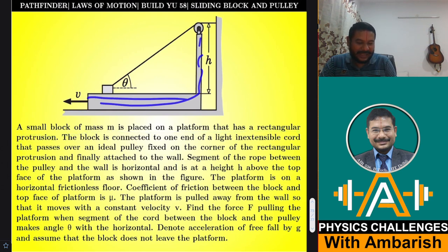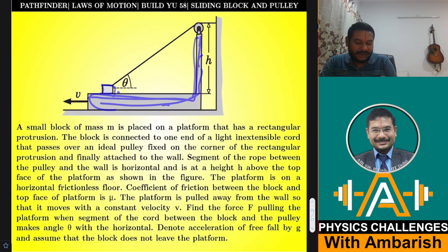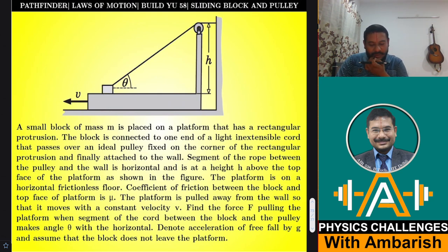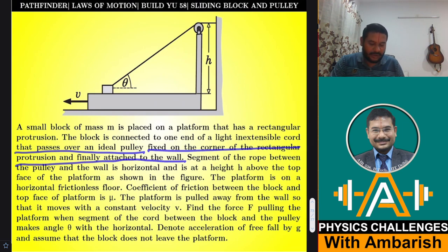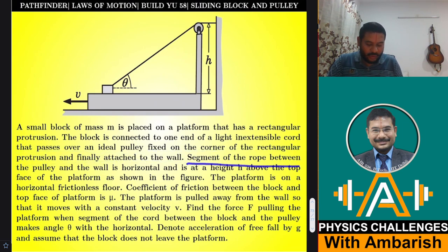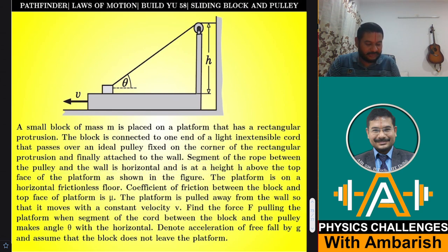This is a kind of L-shaped plank, and there is a small block kept over it. The block is connected to a string passing over a pulley fixed on the corner of the rectangular protrusion, and the string is finally attached to the wall. The segment of the rope between the pulley and the wall is horizontal and is at height h above the top face of the platform.